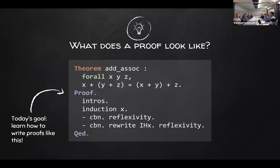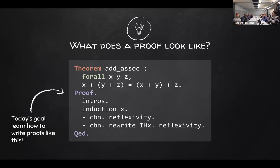This is what a proof looks like in Coq. I don't expect you to fully understand this yet, but this is a simple proof that addition is associative — addition of natural numbers. So that means it doesn't matter which way you group the parentheses. That's what a proof looks like.